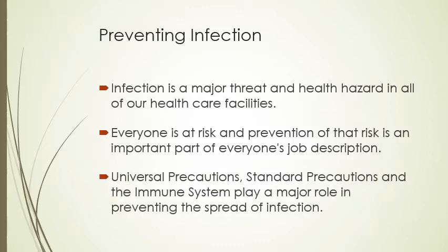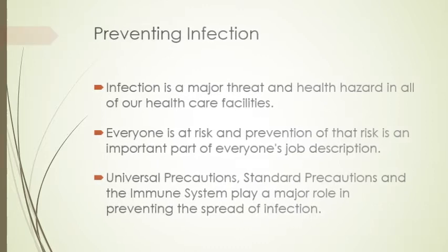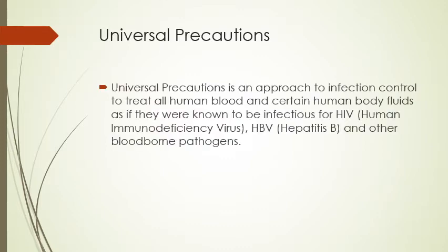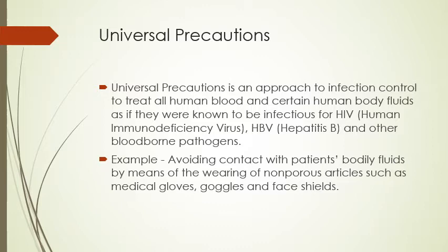That's why it's important that we follow universal precautions and standard precautions, and it's important to understand how the immune system plays a major role in preventing the spread of infection. Universal precautions is an approach where we are assuming everybody we come into contact with has an infectious disease — never guessing whether a person does or doesn't. We are assuming that every single person we come across has an infectious disease, and therefore we have to protect ourselves and everyone around us.